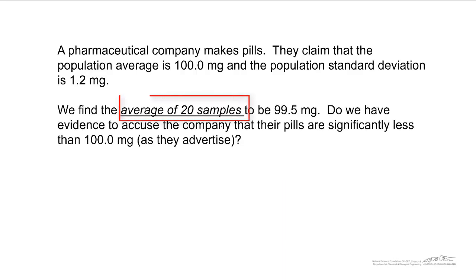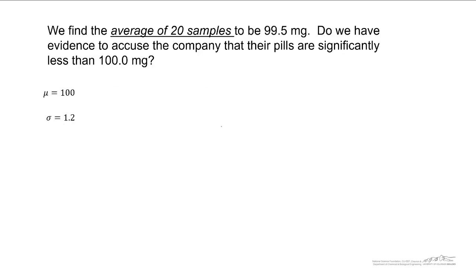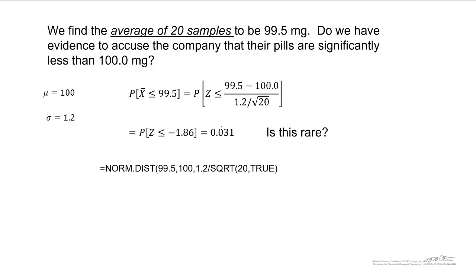We look at 20 samples, n equals 20, and we find the average to be 99.5. Is there evidence that the company might be falsely advertising? We can analyze this, the average of 20 samples to be 99.5, convert this to a z value, and we're getting the probability that the average of 20 samples is less than 99.5. This only occurs 3% of the time.